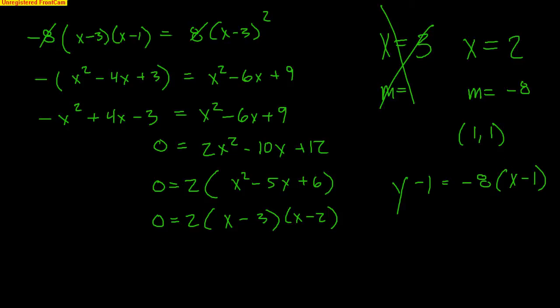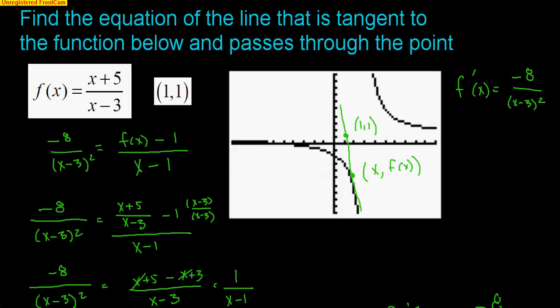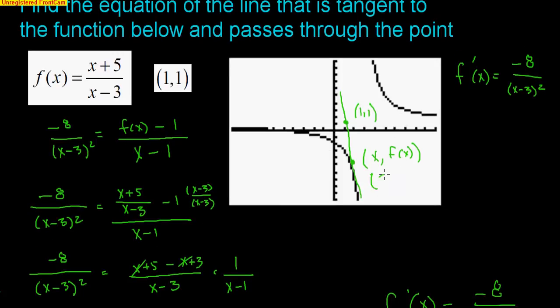So the equation of the tangent line is y - 1 = -8(x - 1). The point of tangency is (2, f(2)) — plugging 2 into the function gives (2+5)/(2-3) = 7/(-1) = -7, so the point of tangency is (2, -7). Hopefully that helps you with the worksheet problems. Let me know if you have any questions.